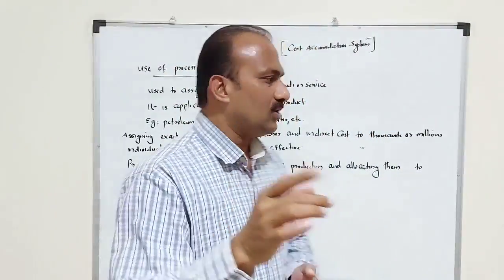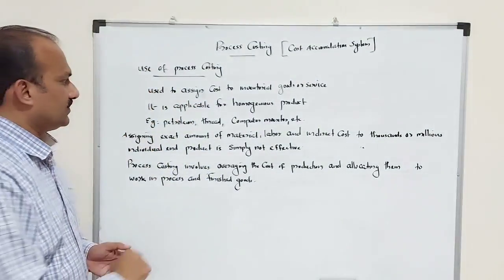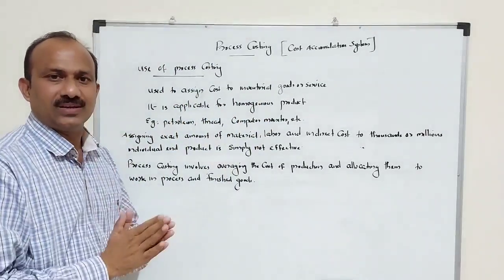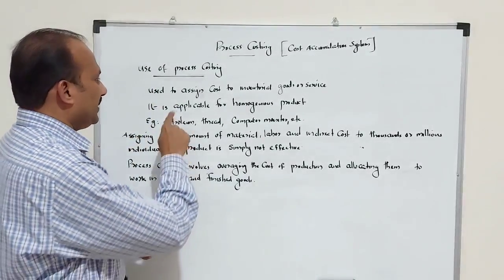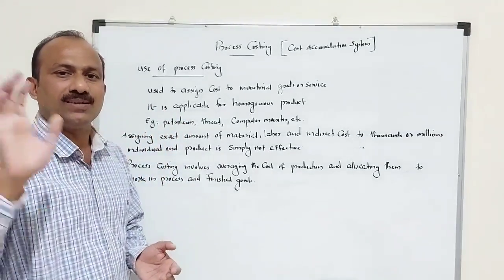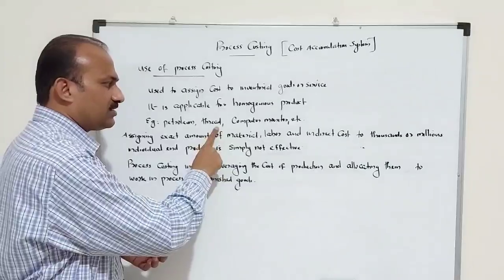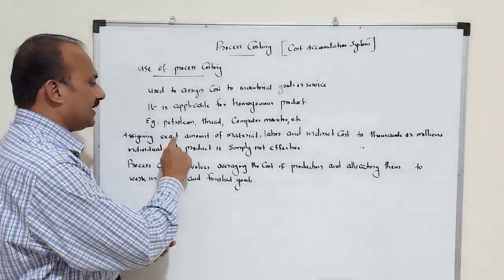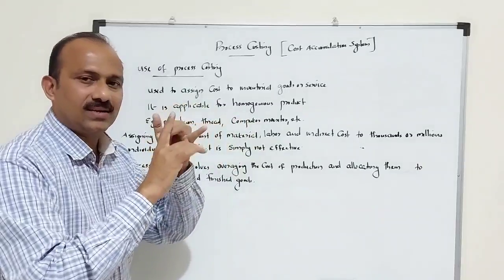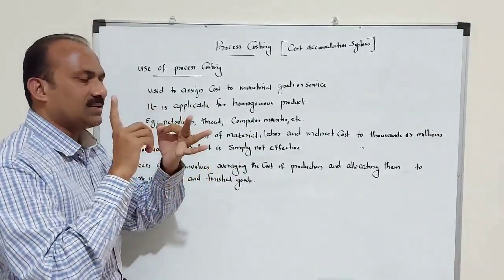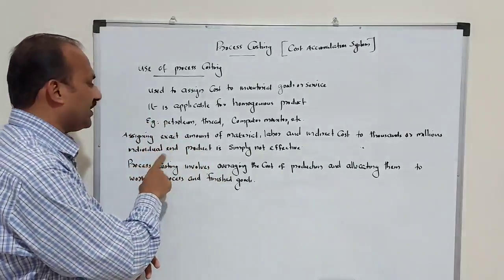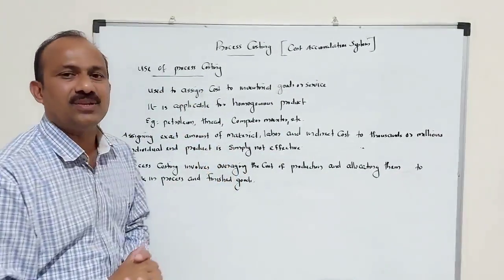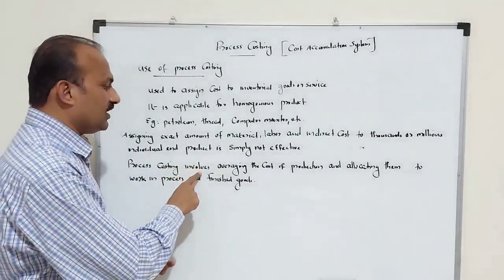The use of process costing: firstly, it is used to assign cost to inventory goods — what is the cost of the inventory. It is applicable for homogeneous products only, for example petroleum, thread manufacturing, and computer monitor fields. Assigning the exact amount of material cost, exact amount of labor cost, and exact amount of indirect cost to thousands or millions of individual products is simply not cost-effective.